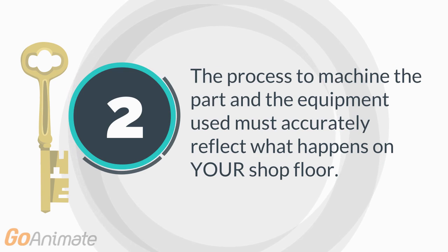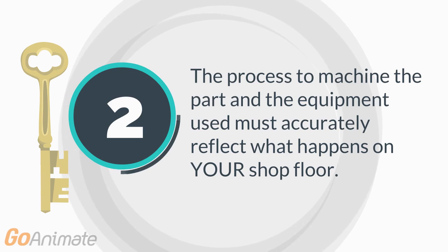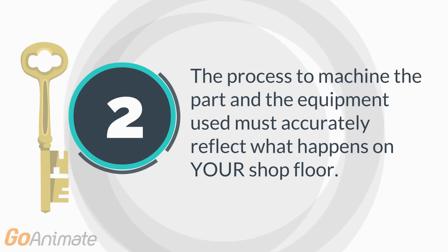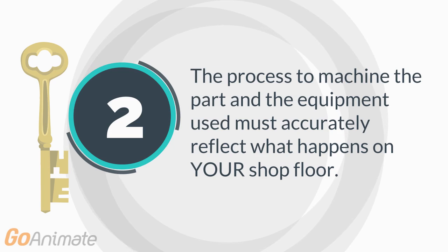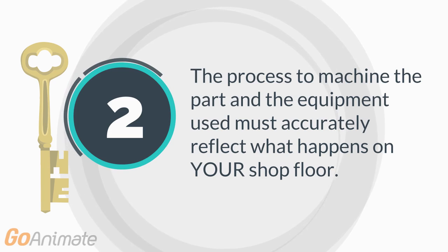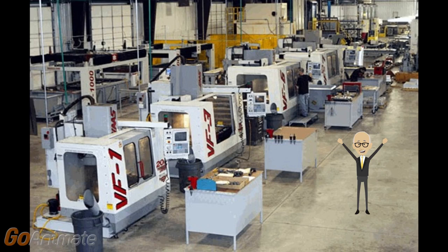Key number two: the process to machine the part and the equipment used must accurately reflect what happens on your shop floor. Feature recognition software may be a quick way to come up with a cycle time estimate, but is it the same manufacturing process and equipment that will actually be used on your floor to machine the part? The Kipware CYC design allows you to step through the manufacturing process as it would take place on your shop floor, each time selecting your equipment to be used for each of the operations.